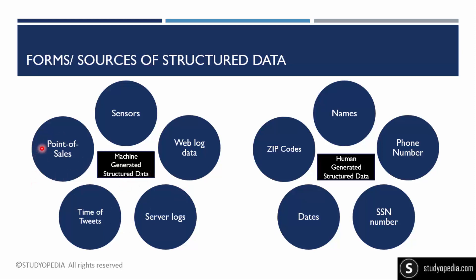Point of sales data is another example. When we pay through UPI or using a QR code, the transaction data — including the timestamp of the transaction — comes under the structured data form.